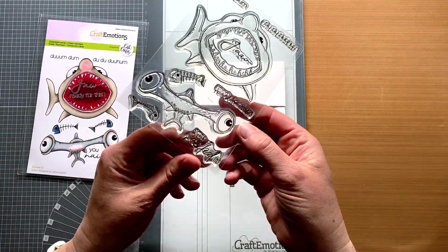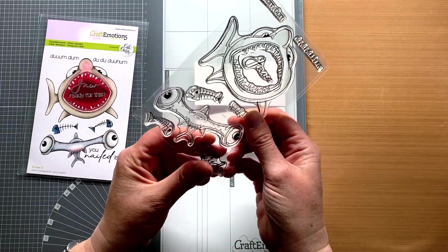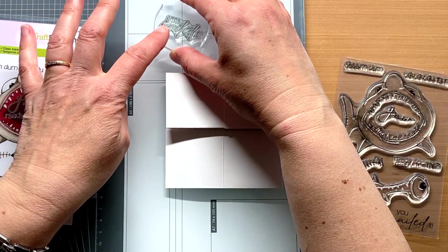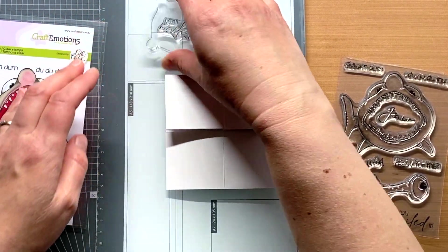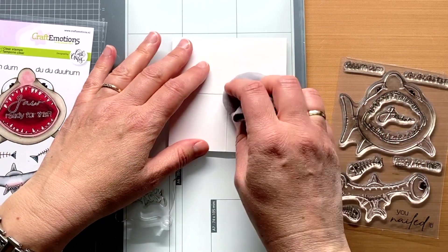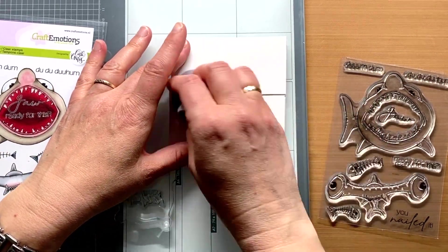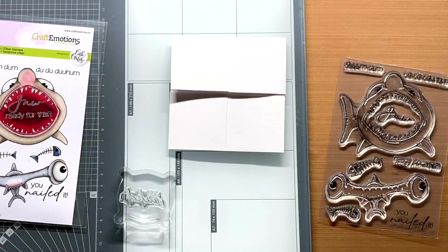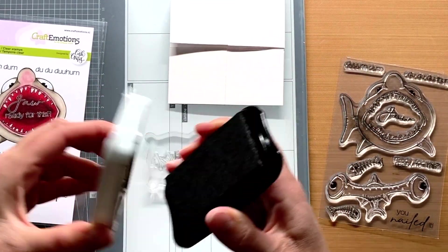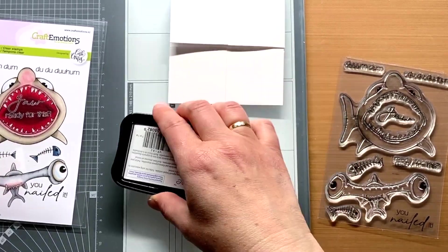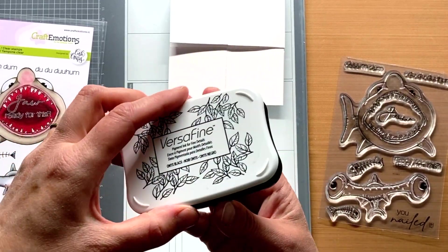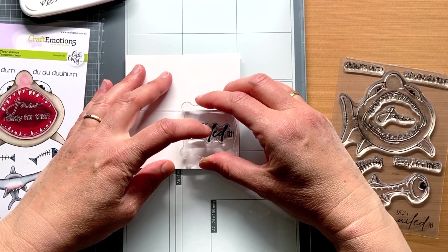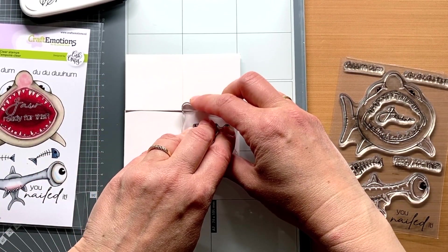I stick the stamp on a clear block and before I start stamping I make my paper greaseproof with talcum powder. I made an embossing pouch from a pantyhose with talcum powder in it. It works perfectly. It ensures that the embossing powder does not stick to the paper in places where you do not want it. I am stamping here with VersaFine ink, a very crisp ink.